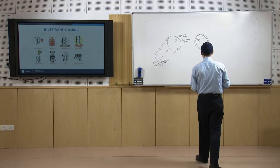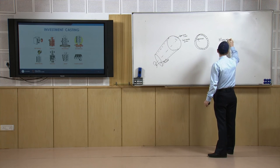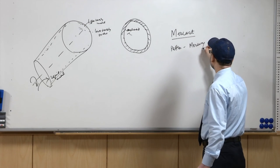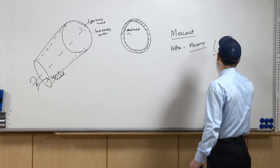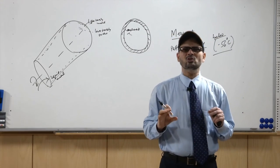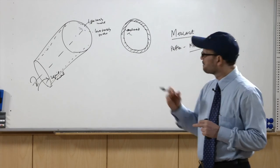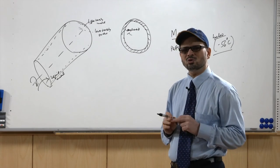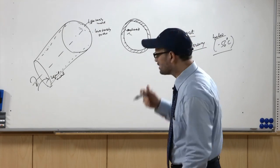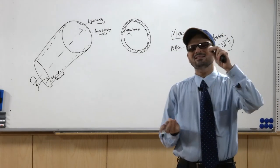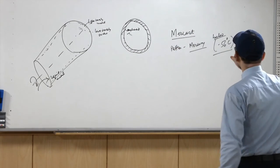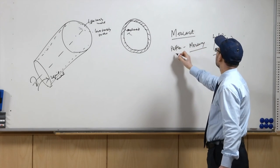There is another variety called the Mercast process, where the pattern material is mercury. Mercury is used as the pattern material — it is made solid below minus 56 degrees Centigrade. The shell is prepared at that low temperature, then close to minus 34 degrees C the mercury melts and all of it comes out of the cavity. The cavity is then further fired and used. This is the Mercast process where the pattern used is mercury.